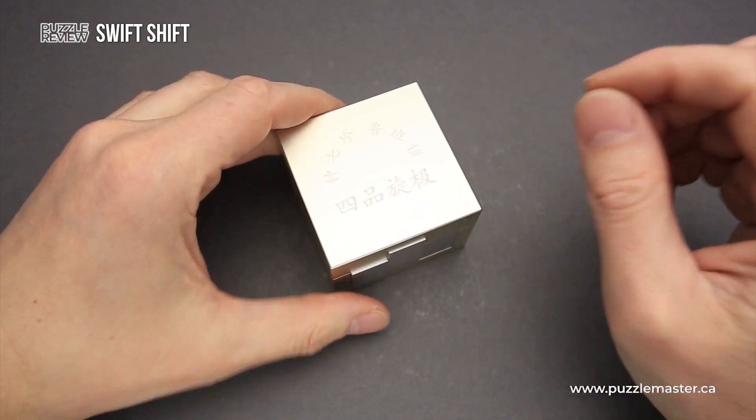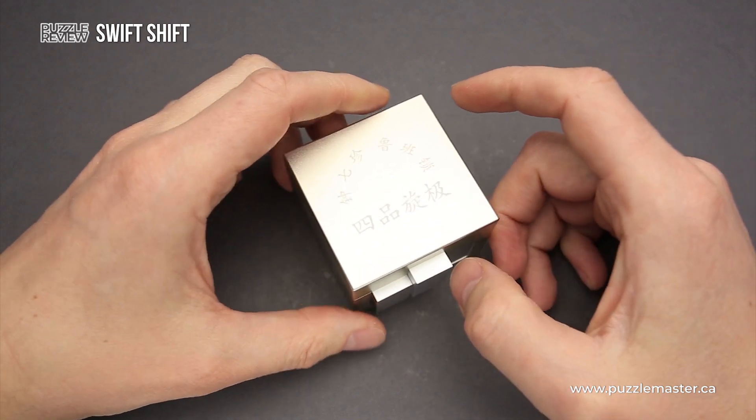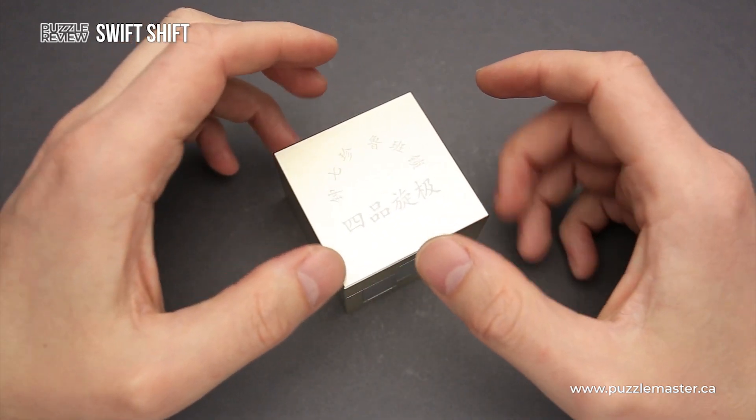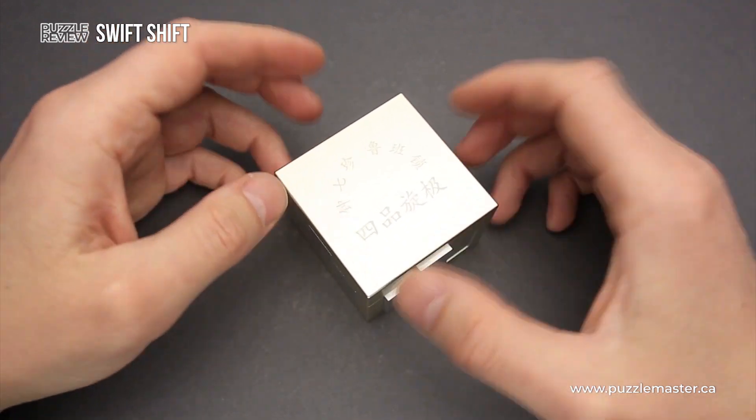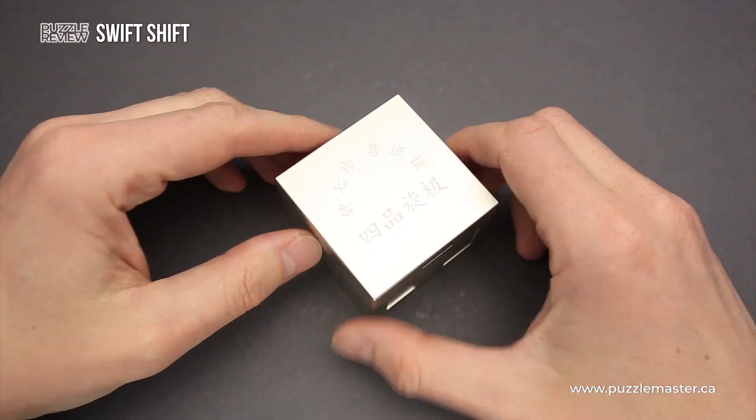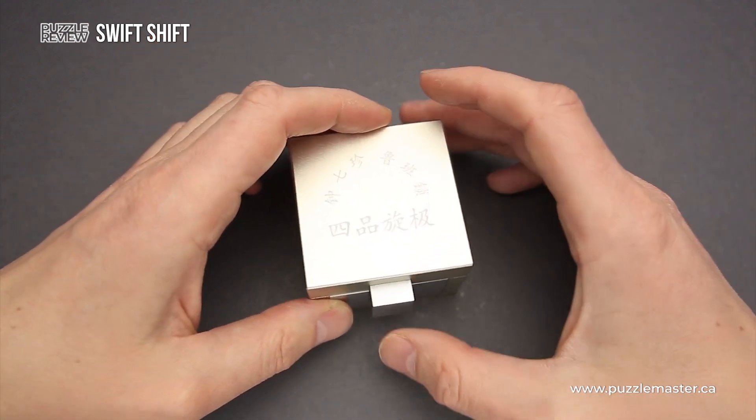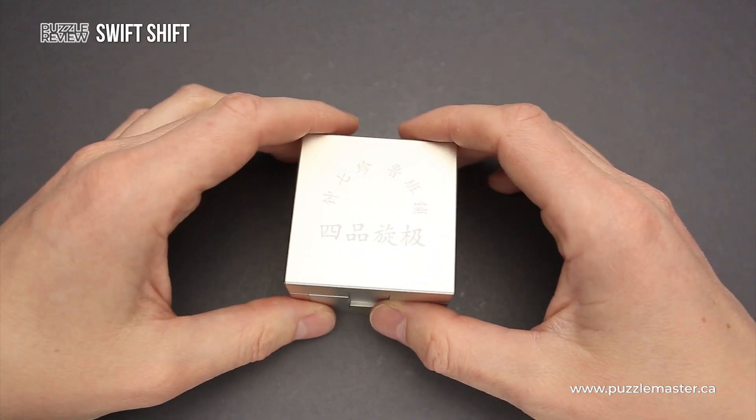This puzzle is extremely difficult. It requires 33 steps to remove the first piece and 71 steps in total. And when the puzzle is disassembled, you have to assemble it to complete the solution and you have to do 71 more steps to assemble everything back inside the frame.